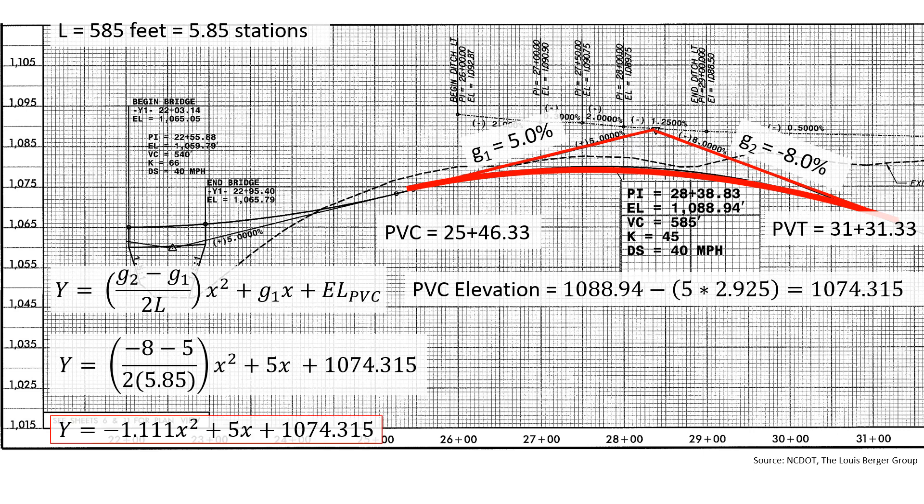We can simplify this in our parabolic equation, which is part of what we're asked for, is y equals negative 1.111 times x squared plus 5 times x plus 1,074.315.